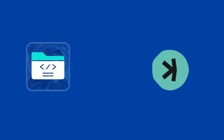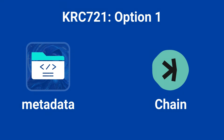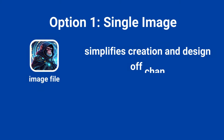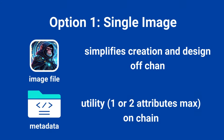If you choose option one — metadata on chain — creating a single image for all tokens and storing metadata on chain, you'll be limited to 520 bytes of data, which includes the rest of the script instructions. This limits the number of attributes you can add, but it's ideal for utility-based NFTs, such as those granting special access to services. It also simplifies the creation and design process.